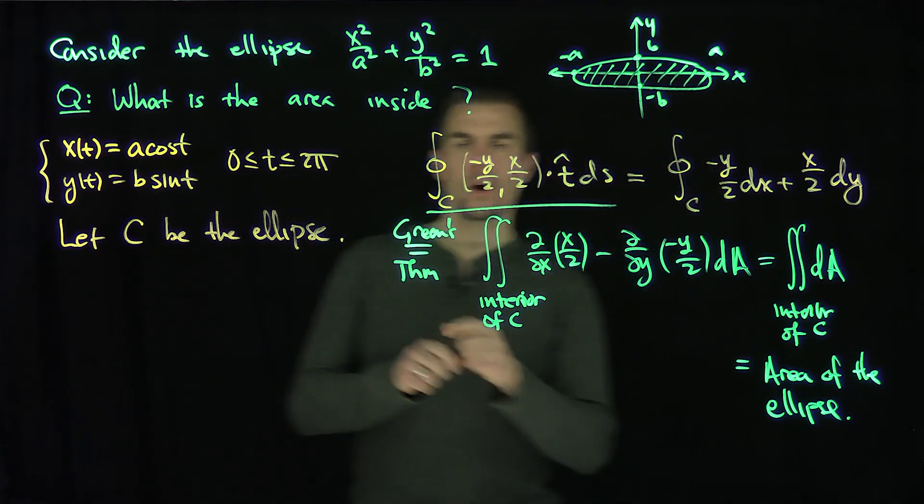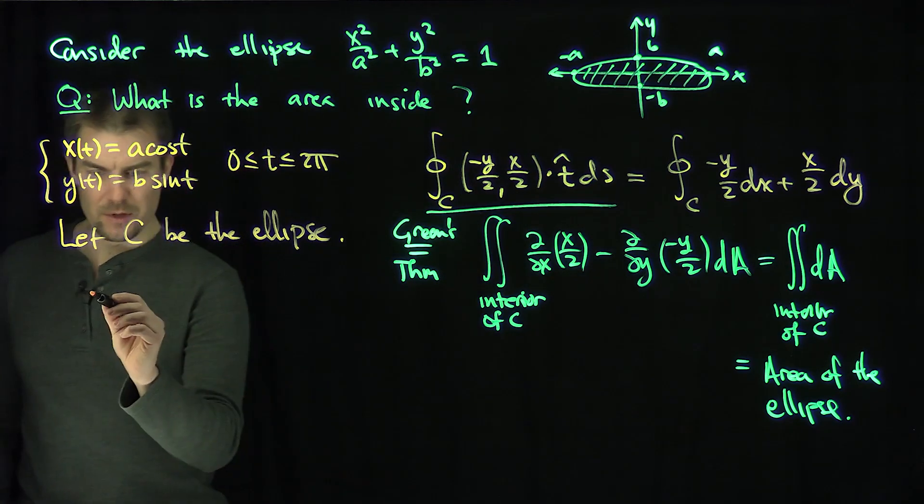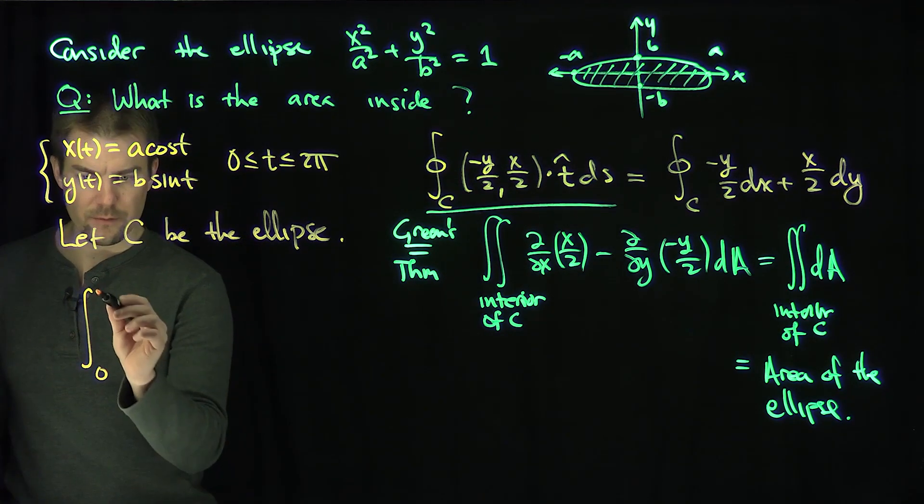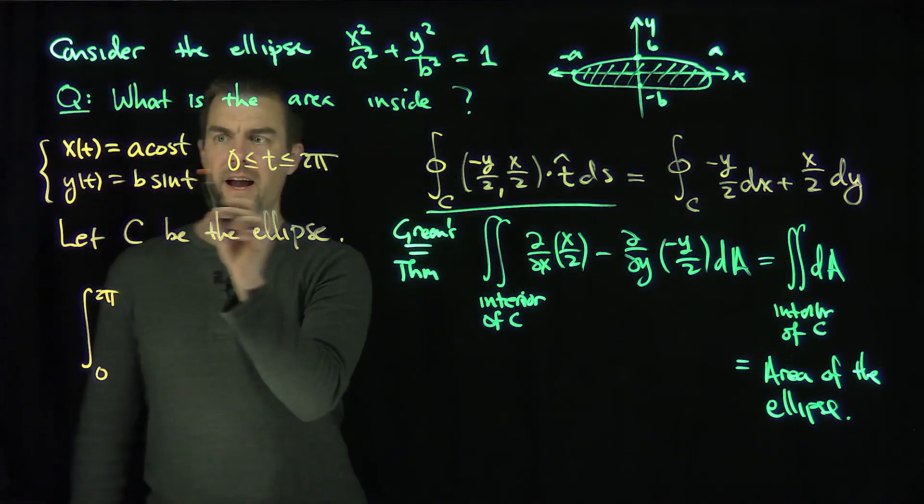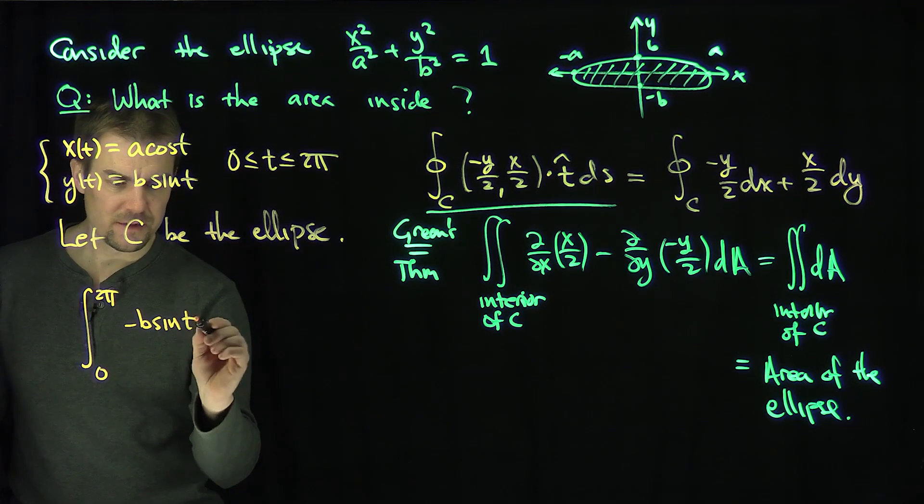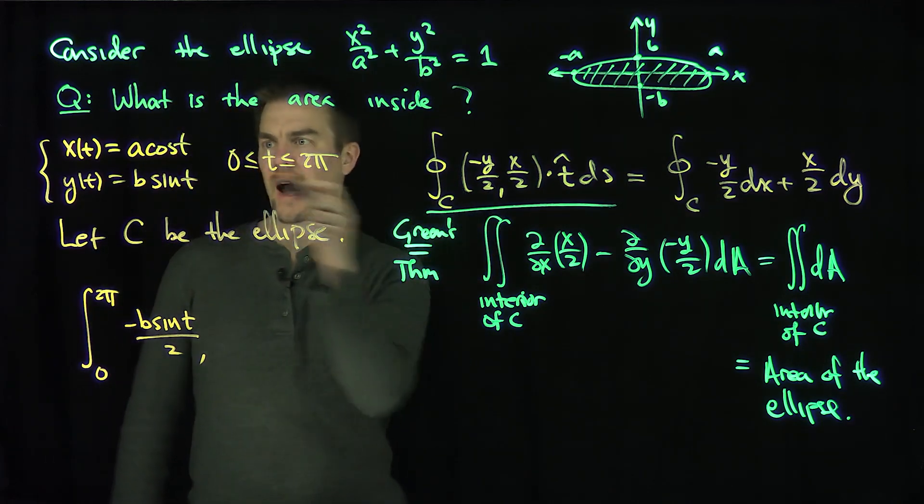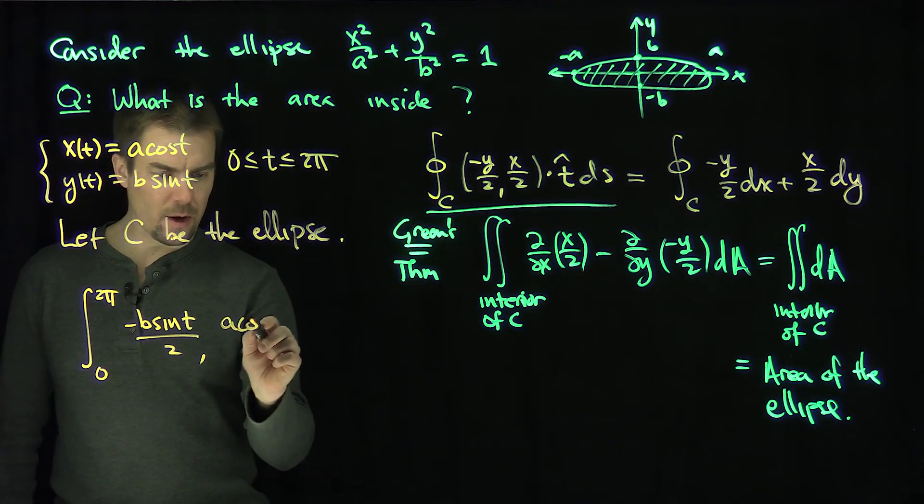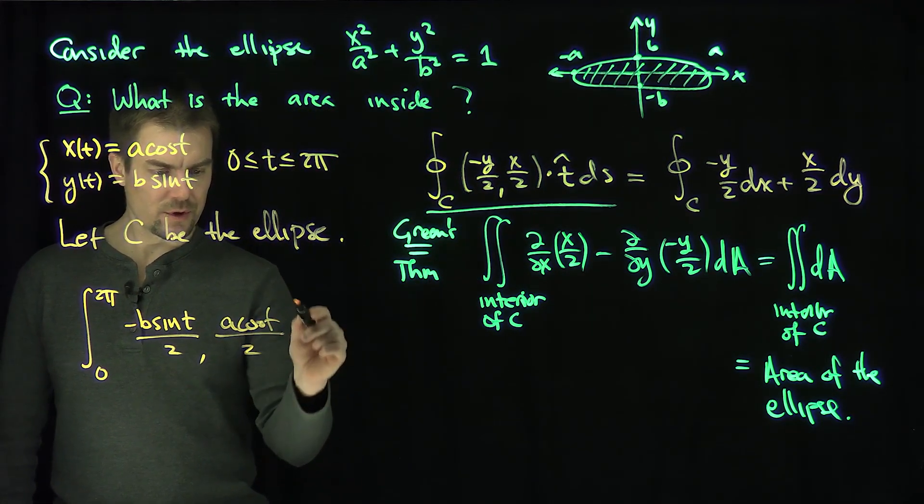So what is negative y in the curve? So this is going to be the integral. The flow is actually equal to the integral from 0 to 2 pi. What is negative y? That's going to be negative b sine of t over 2, comma, what is x? x is a cosine t, a cosine t over 2.